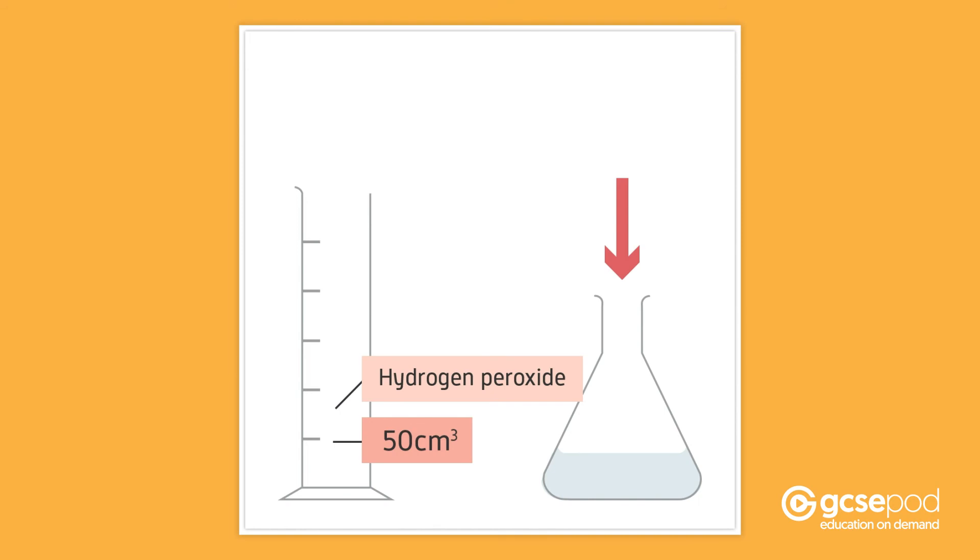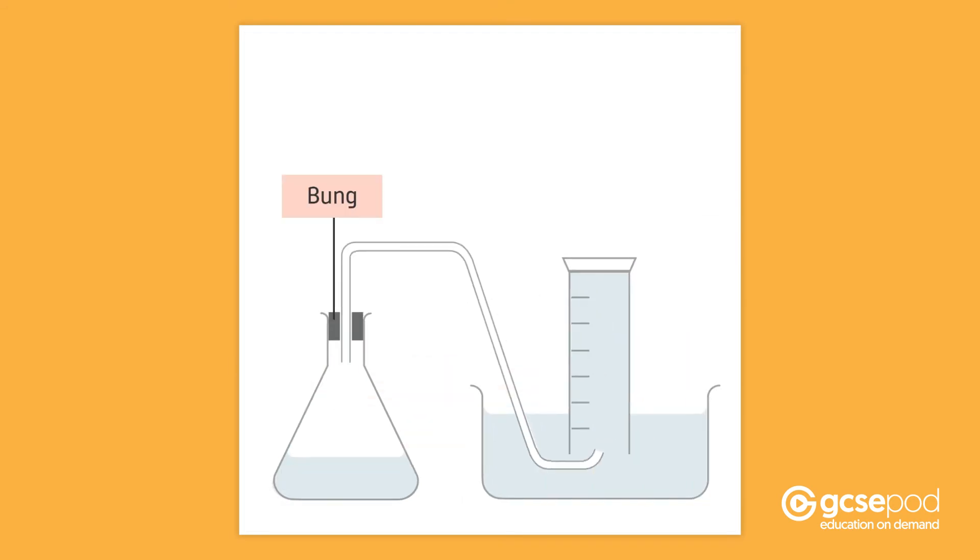The conical flask is sealed with a rubber bung into which a delivery tube is connected. The other end of the delivery tube enters an upturned measuring cylinder full of water, which is itself standing in a trough of water.